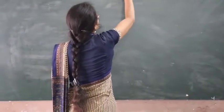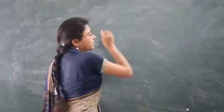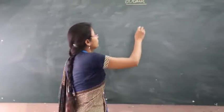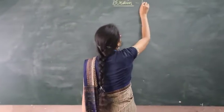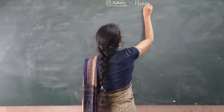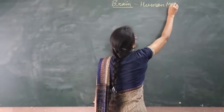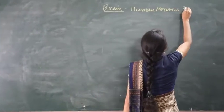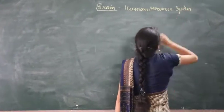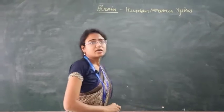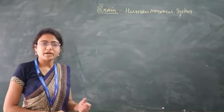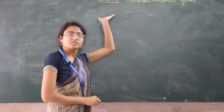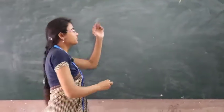The brain is the most prominent and important coordinate control center of the human nervous system. The human nervous system is of two types: the central nervous system and the peripheral nervous system. The brain is the part of the central nervous system.